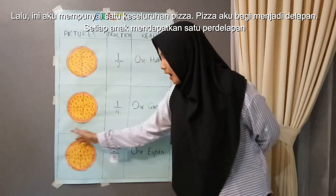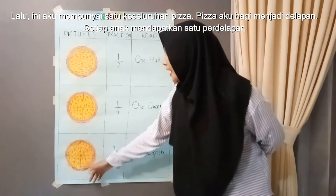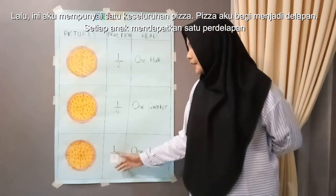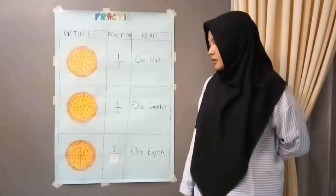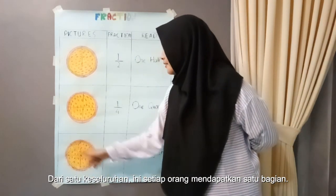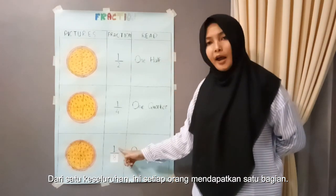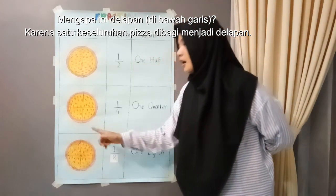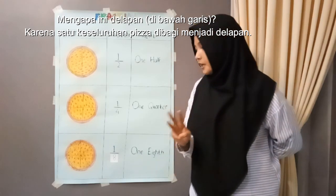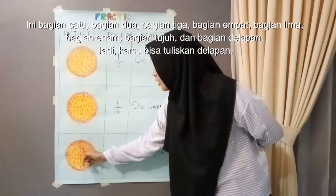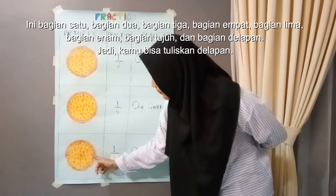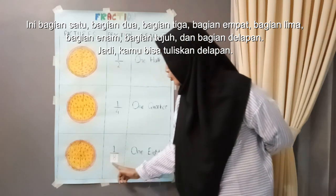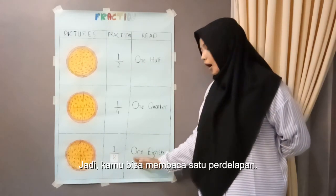I have one whole pizza. The pizza I divide into eight. Each person gets one eighth. One whole pizza — one person gets one. And then, one eighth, because one whole pizza we divide into eight. This is part one, part two, part three, part four, part five, part six, part seven, and part eight. So you can write eight, and then you can write one eighth.